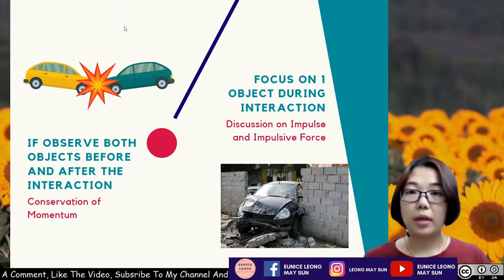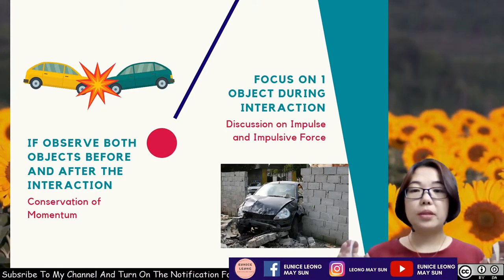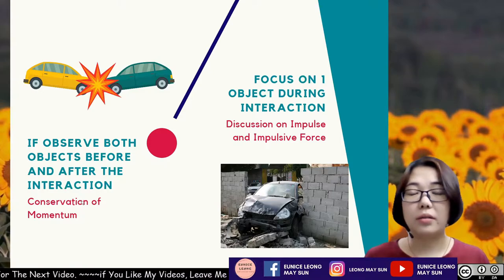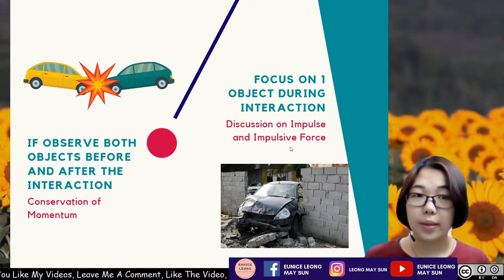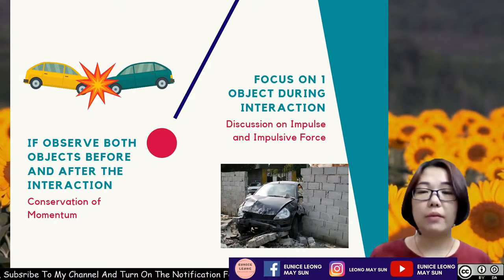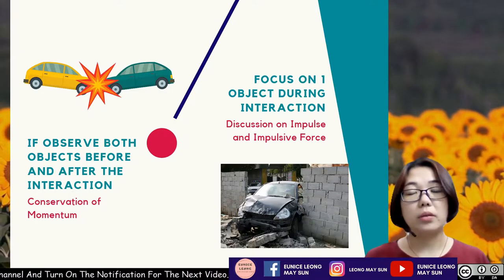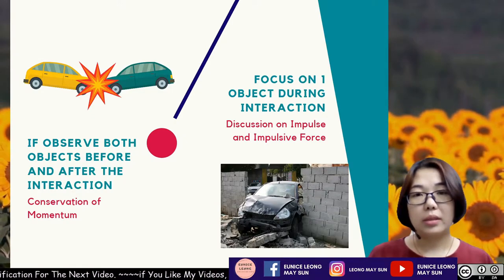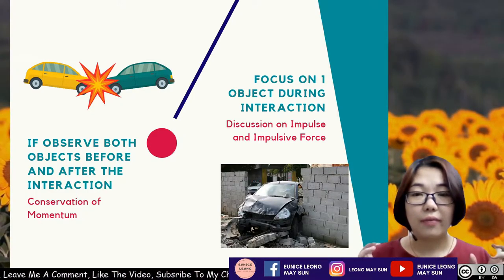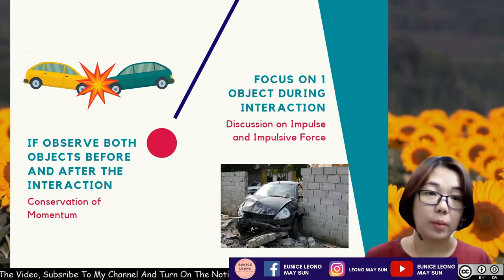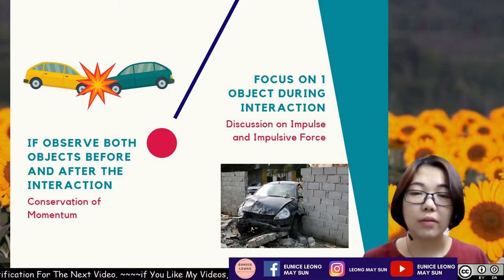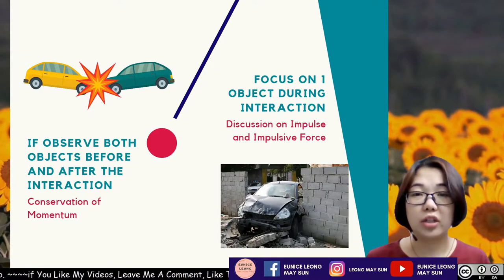In this particular video, we're going to be talking about two objects. When we observe two different objects' interaction before and after the interaction, we will have to discuss conservation of momentum. There's one thing everyone has to be aware of: whenever we deal with impulse, impulsive force, momentum, or conservation of momentum, the physical quantity just right before and after the interaction — that is the initial momentum, final momentum, or the impulse — represents the quantity immediately before and after the interaction.